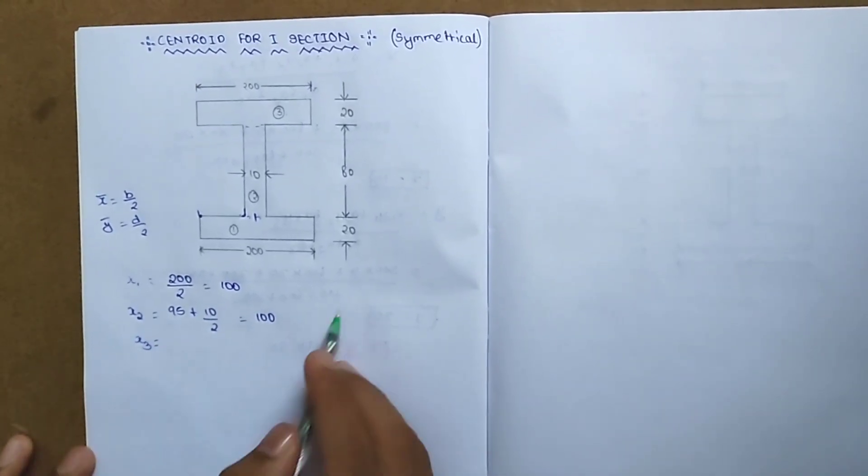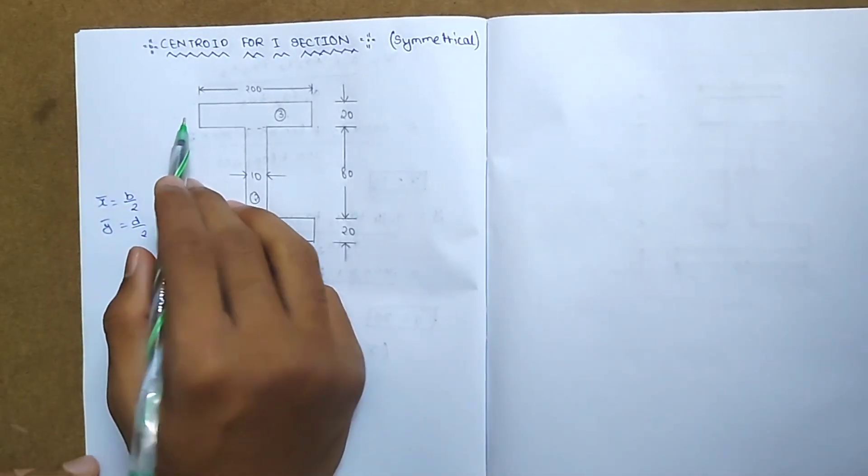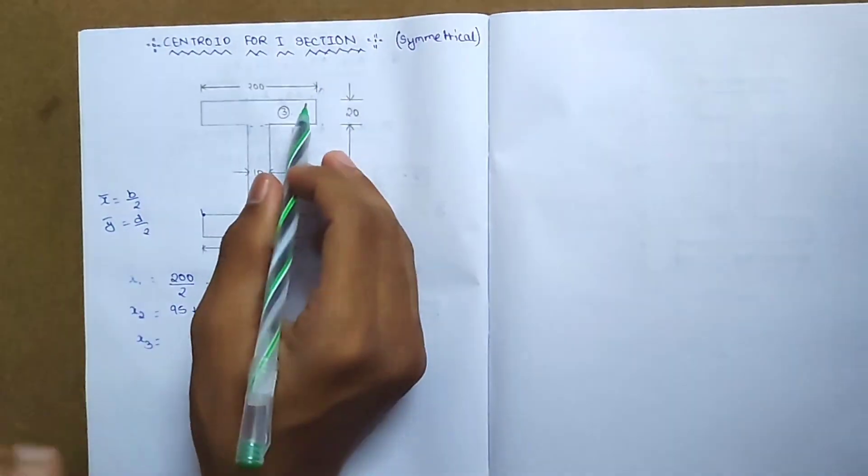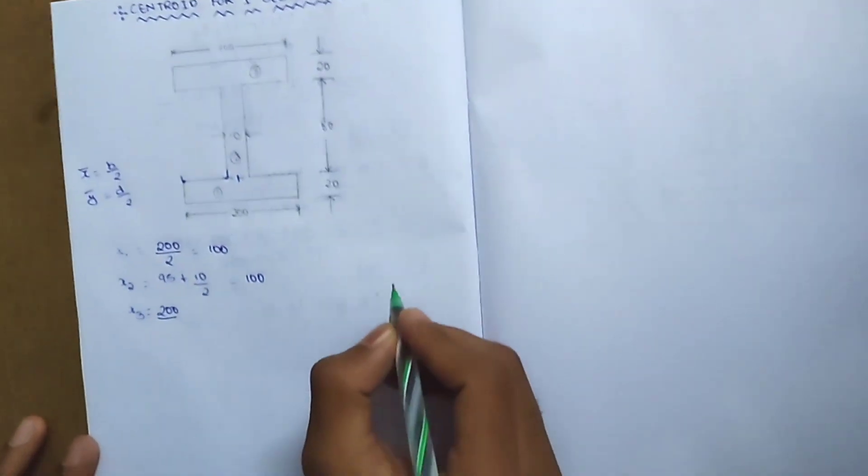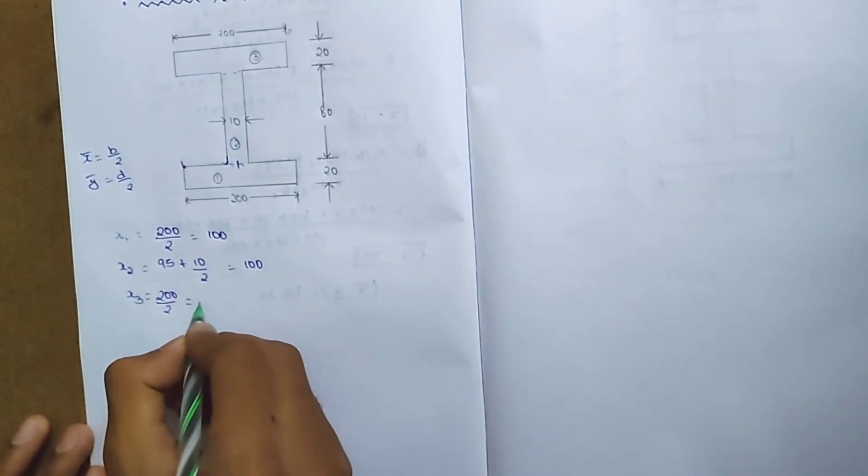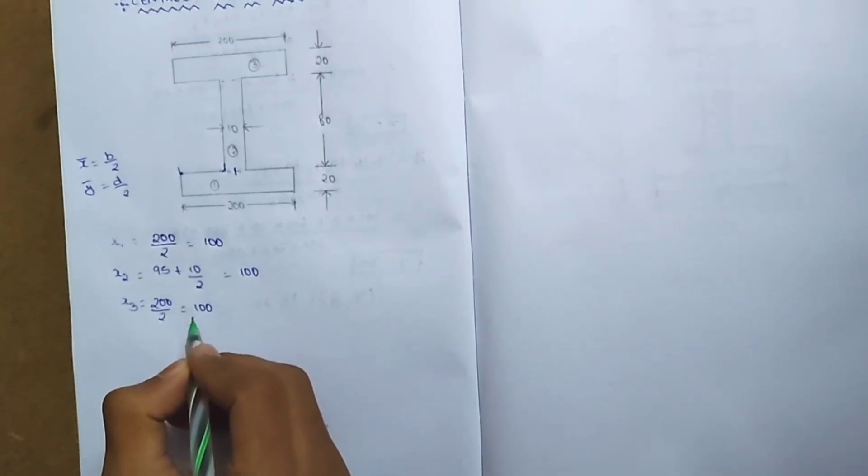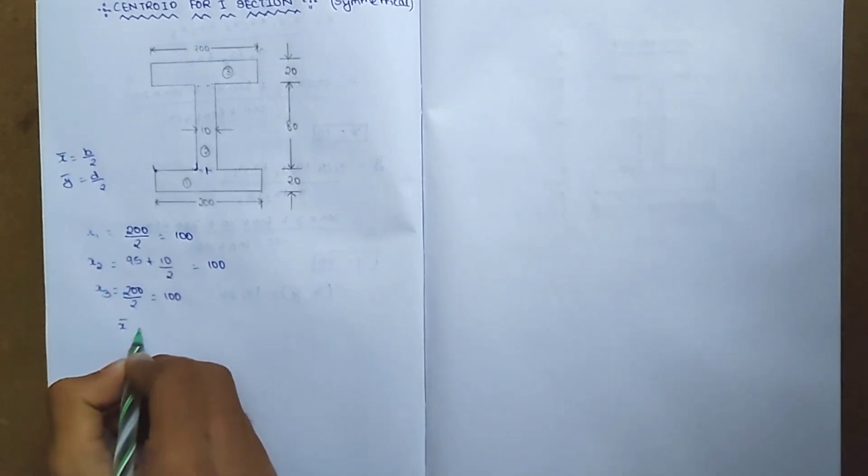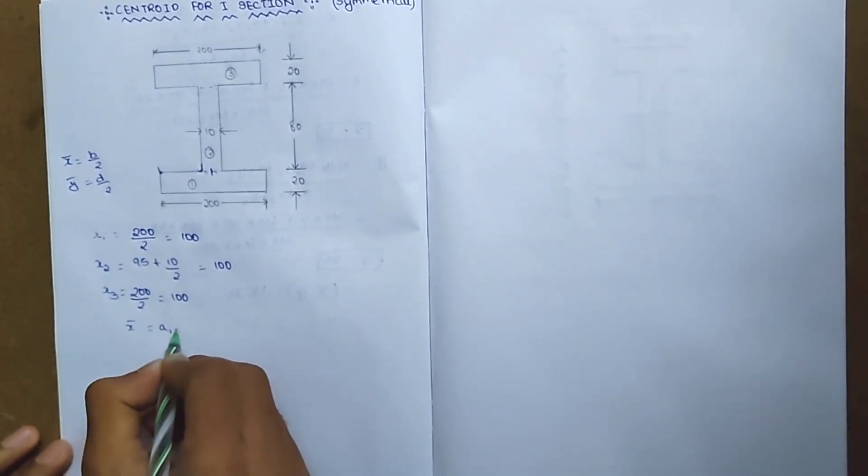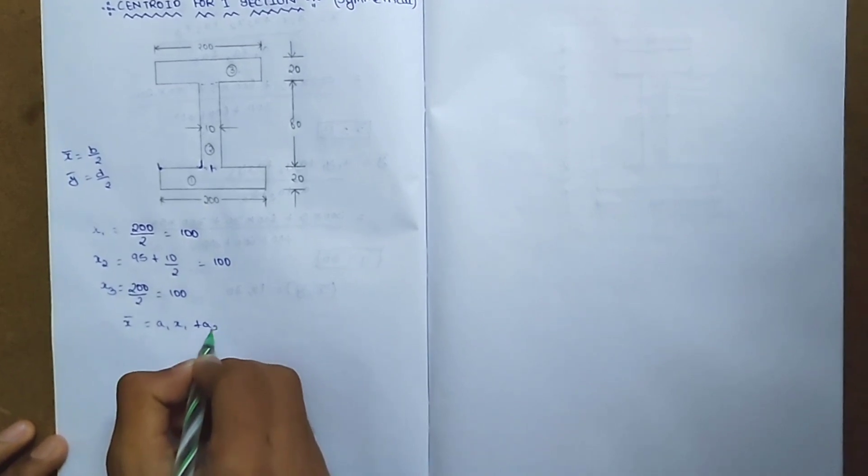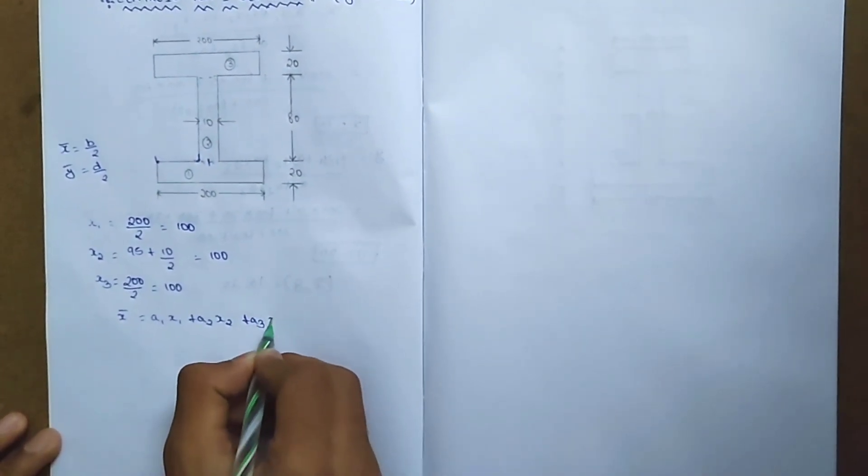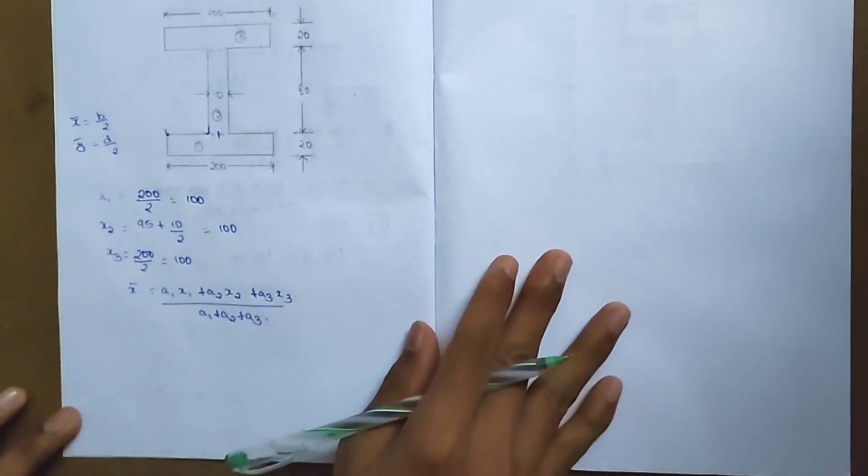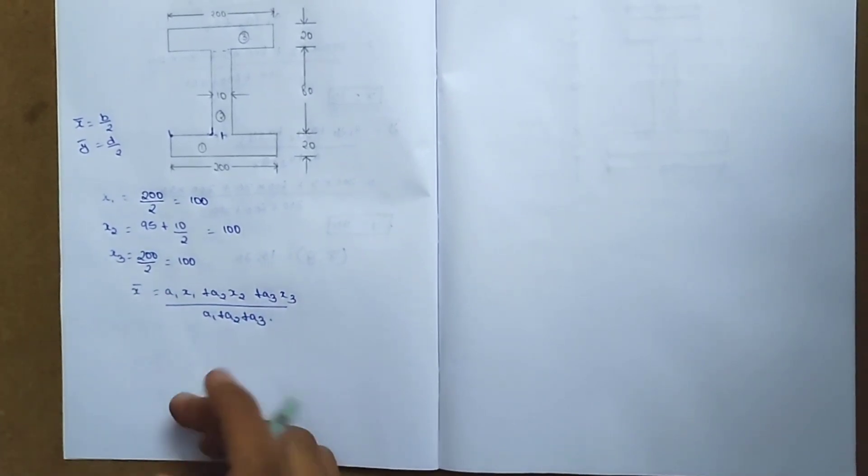For x3, calculate on the left side from the y-axis. The distance is 200 by 2, which equals 100. Now we'll calculate x-bar.